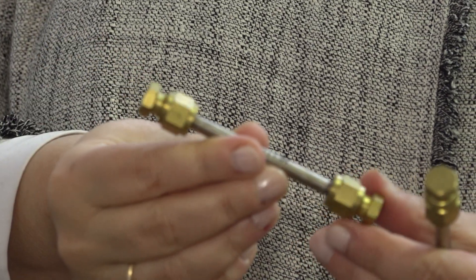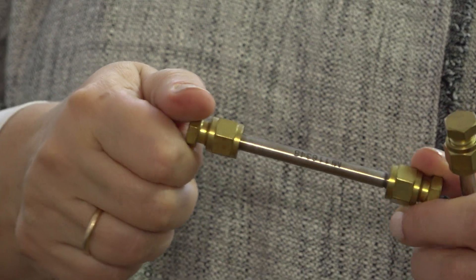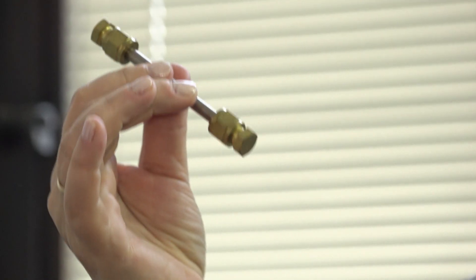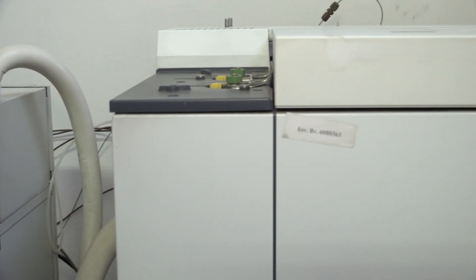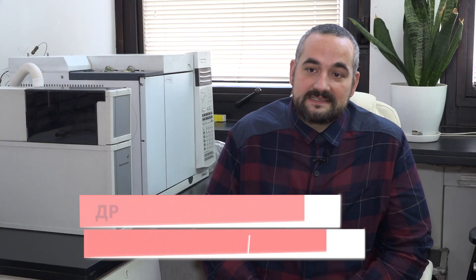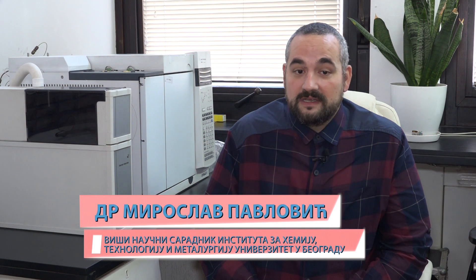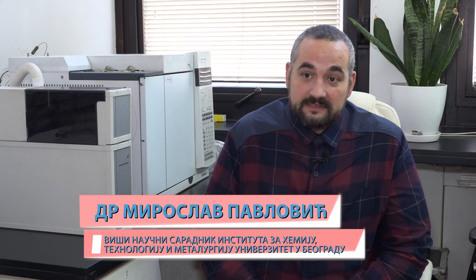Dalje smo na jednom abstraktnom putu ali mislim da primenom određenog prvenstveno sa zakonodavne strane zakonodavnih okvira a onda potom i primena tih zakonodavnih okvira bi dovelo do toga da se otpadne vode prečišćavaju. A tehnologije postoje i tehnologije se unapređuju svakog dana i naravno da bi takve otpadne vode mogli da se vrate potom u prirodu i u novi ciklus kruženja vode sa naravno smanjenim uticajem zagađivača u prirodi.